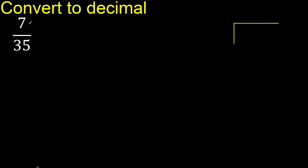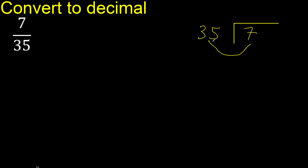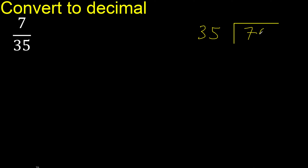7 divided by 35. 7 is less than 35, therefore complete with 0 — always complete with 0. Here: 0 point...